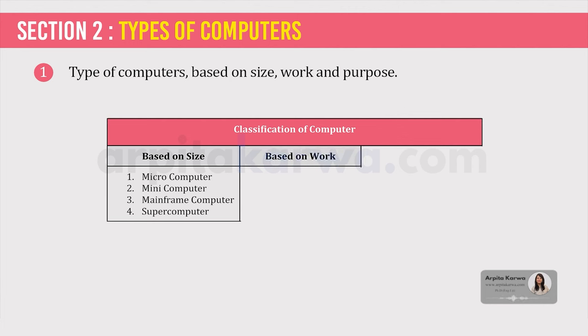Now we shall discuss the types of computers based on their work. The first is analog computer. These computers are job focused and work on the supply of continuous electricity. They carry out basic math and logical operations by processing data. Examples include the speedometer in our vehicles.